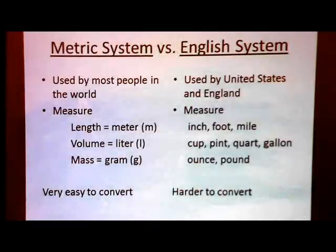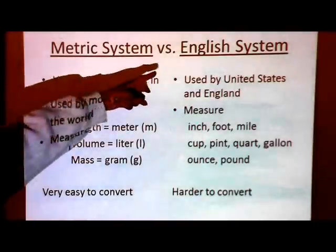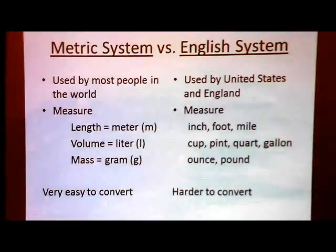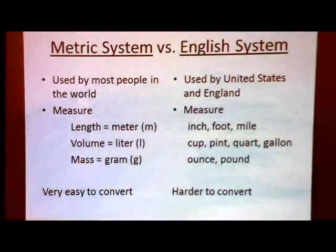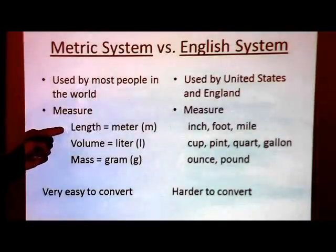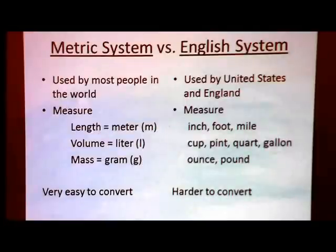Before we go to how to do something, let's talk about the different systems we have. The metric system is used by most people in the world, whereas the English system is used here in the United States and in England, thus the name English. Both measure length, volume, and mass, but we have different terms for these things. In the metric system, length is meter, volume is liter, and mass is gram.